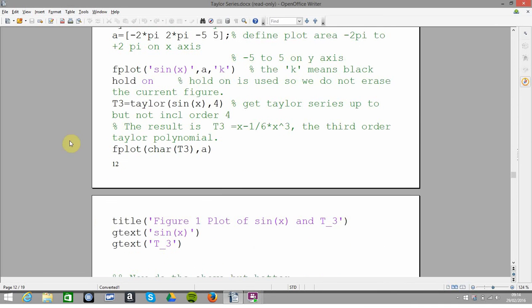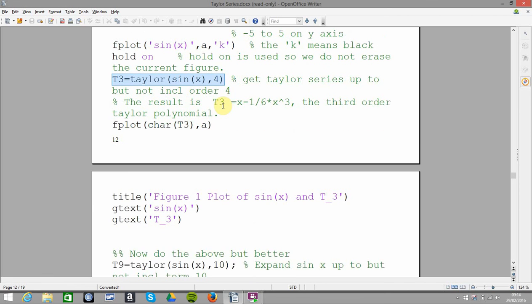So I defined my axis bounds. I plotted sin x. This line here, I got the first four orders, so that would give me up to x cubed. And I fplotted that function, my approximation.